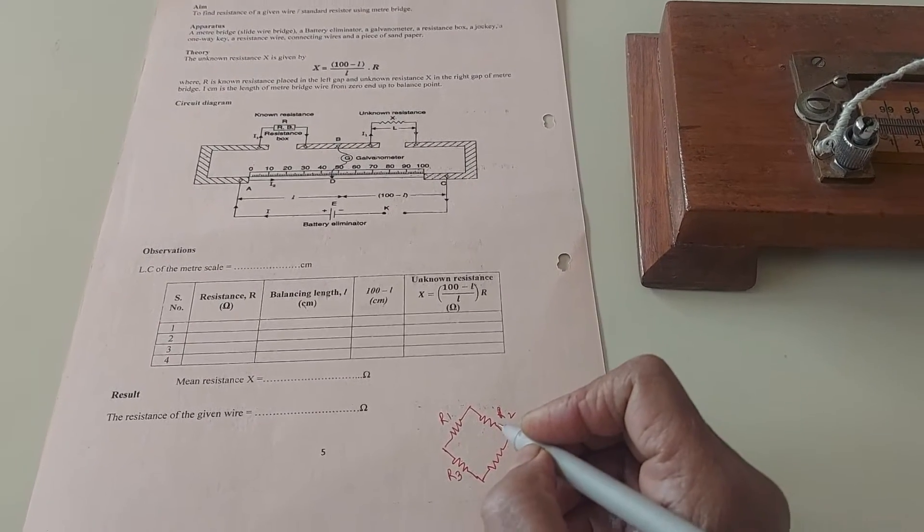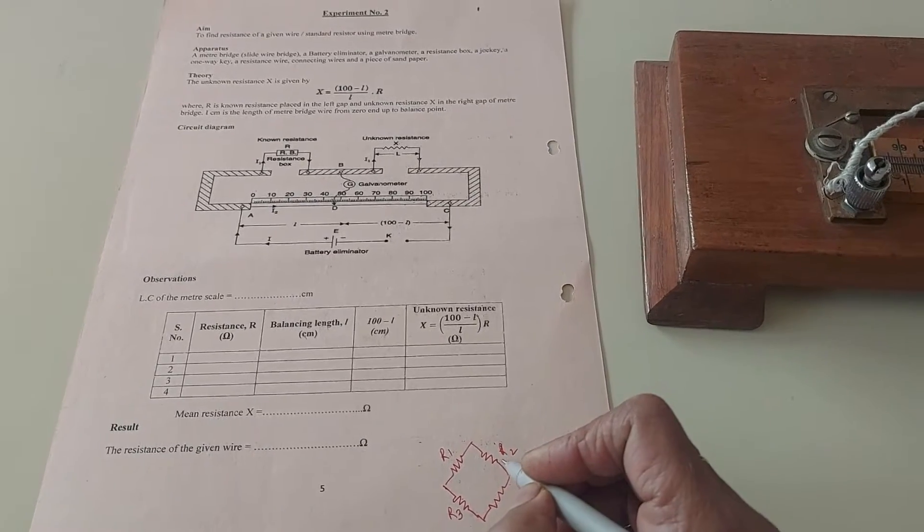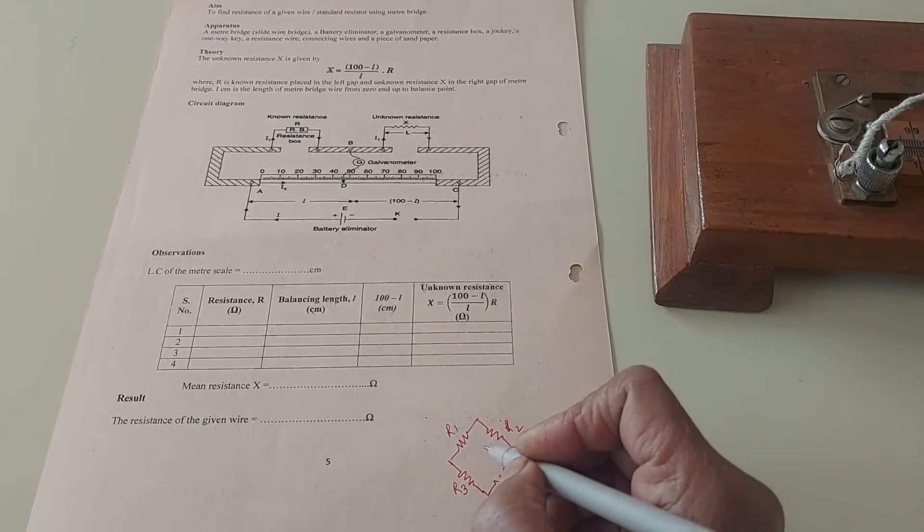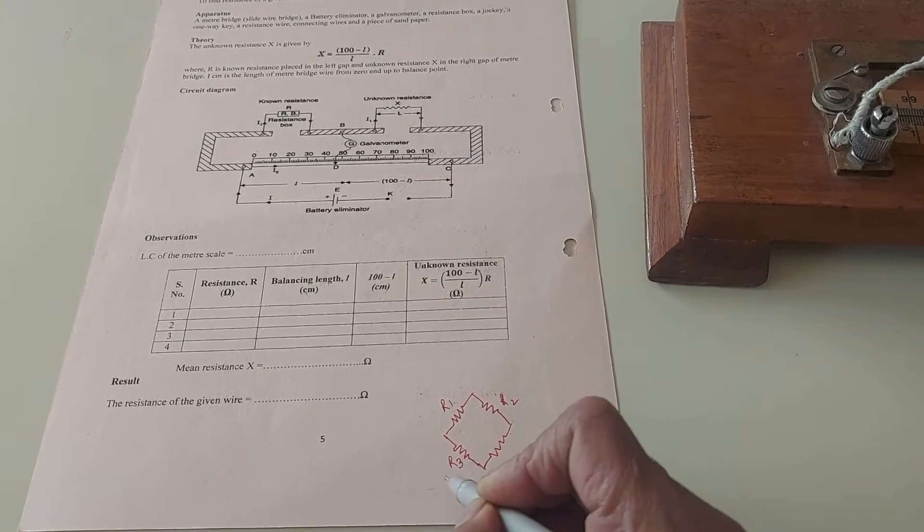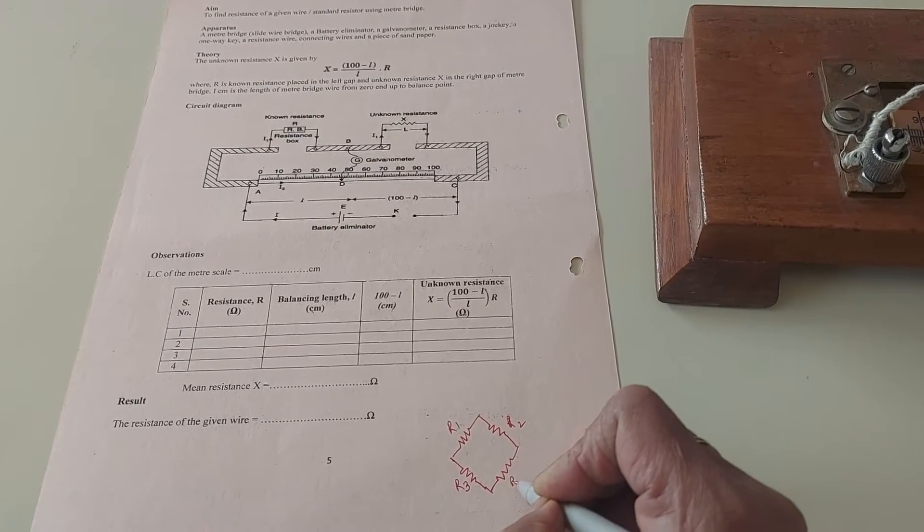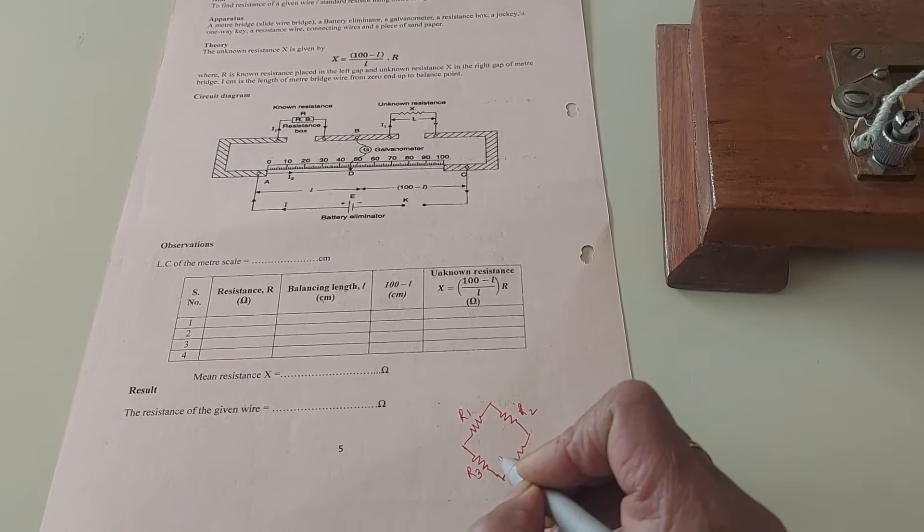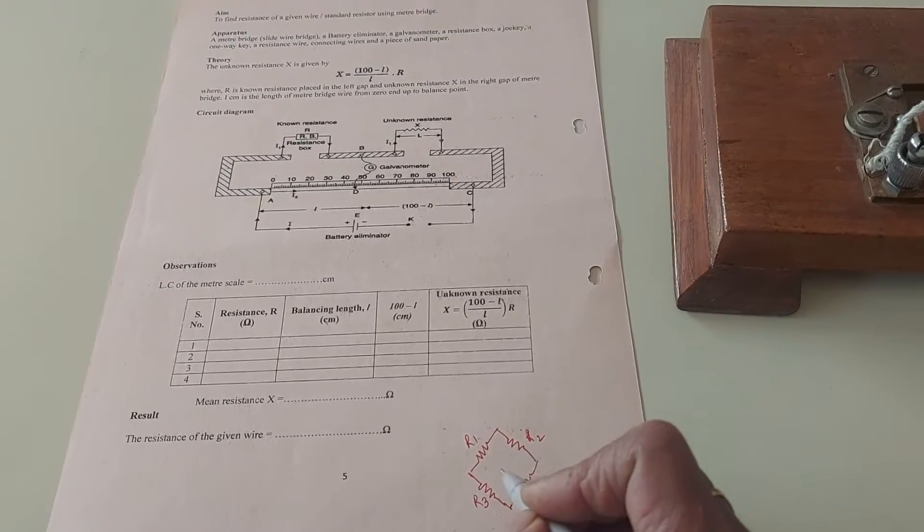The Wheatstone bridge is the principle of the meter bridge. In the Wheatstone bridge we have four resistances R1, R2, R3, R4 arranged along the four arms of a square or a quadrilateral.